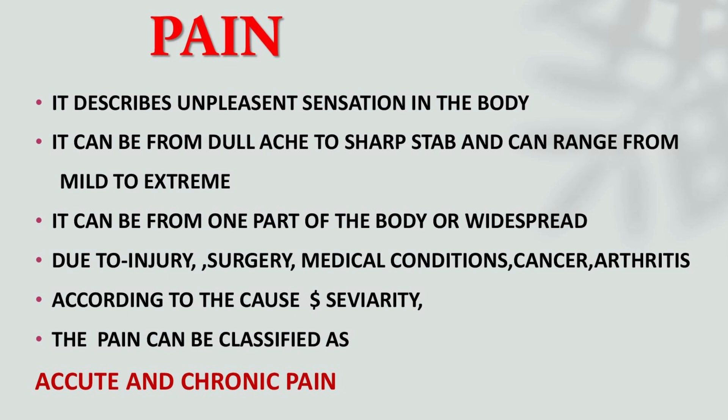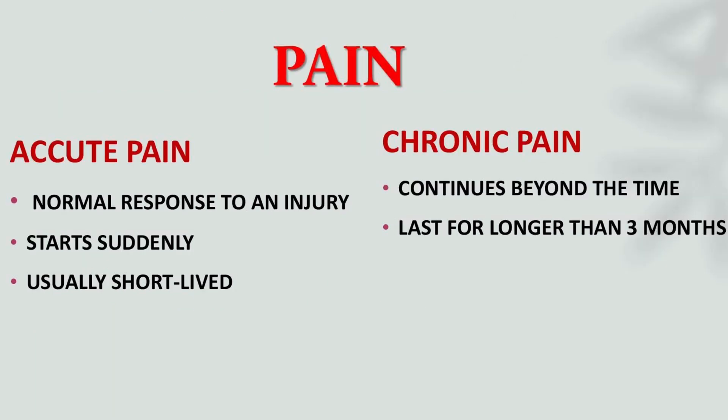According to the cause and severity, pain can be classified as acute and chronic pain. Acute pain is the normal response to an injury — it starts suddenly and is usually short-lived. Whereas in chronic pain, the pain continues beyond the expected time and lasts longer than three months.